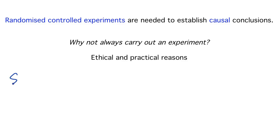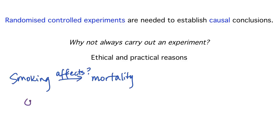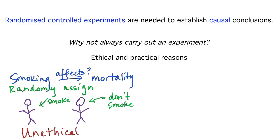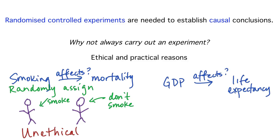If we want to study the effect of smoking on human mortality, we can't randomly assign some people to smoke a pack a day and some people not to — that would be unethical. For studies on humans, we need to have sufficient doubt about the benefit of a treatment that we do not feel we are unfairly exposing subjects to an inferior treatment. If we're interested in how GDP affects life expectancy for countries, we can't manipulate the GDP of a country, so carrying out an experiment is not practically possible.